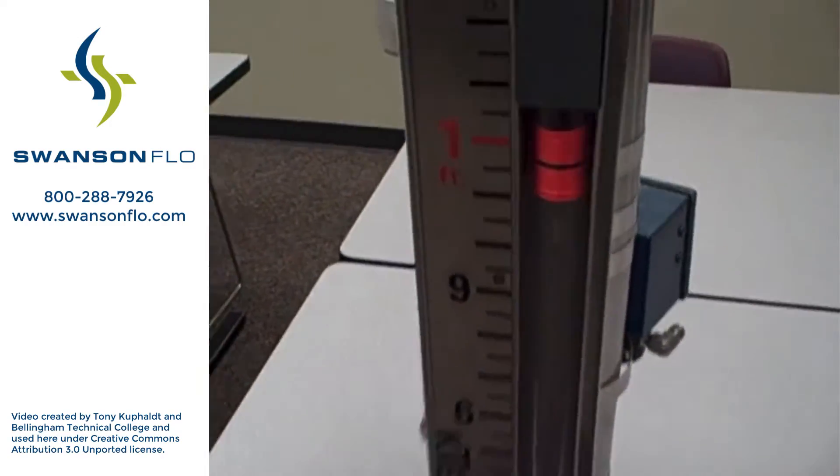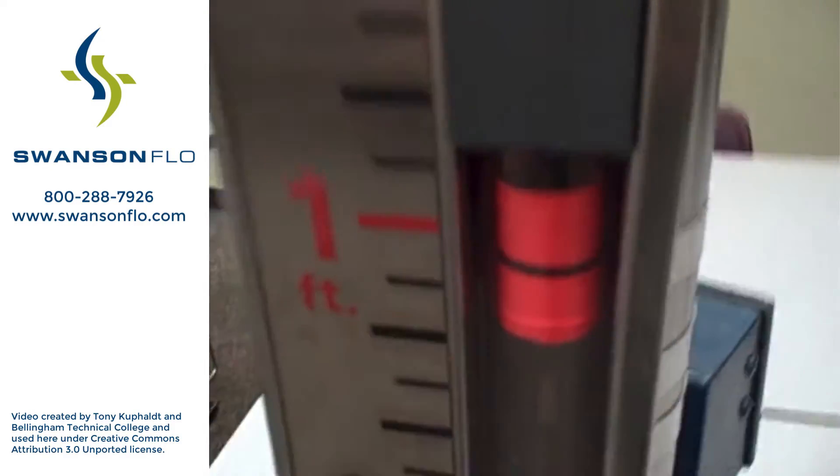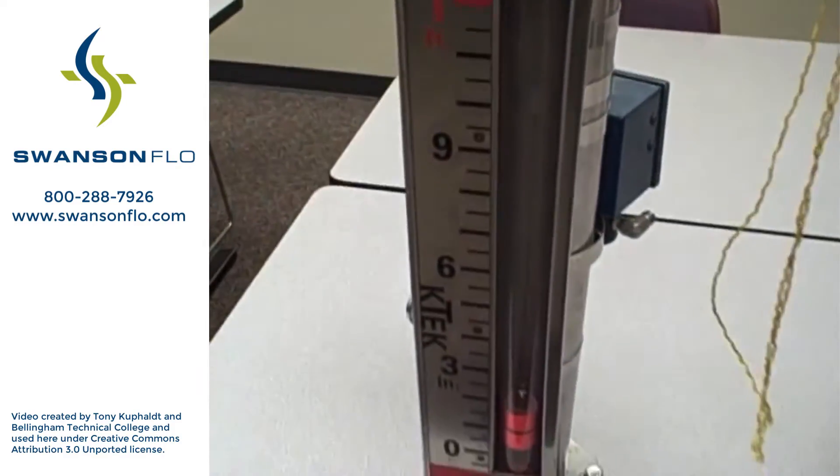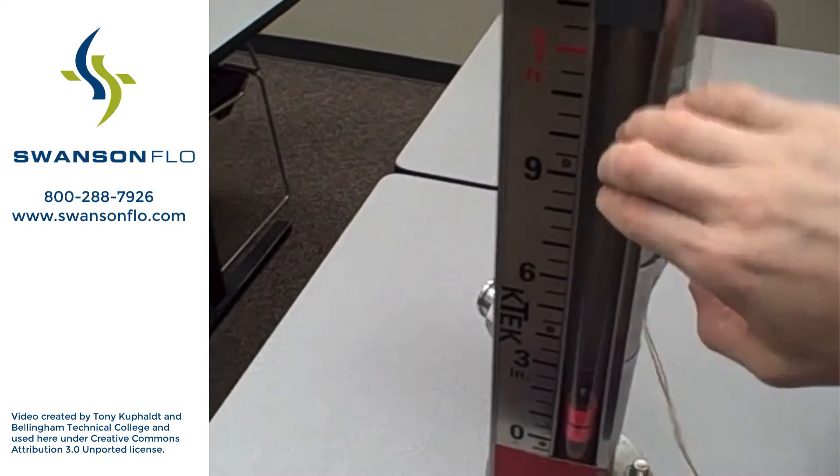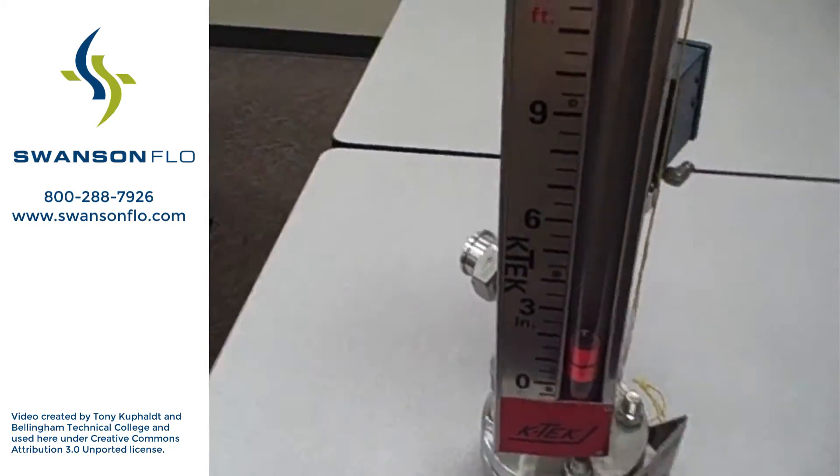So that means this glass tube we see right here with the orange fluorescent indicator is a non-pressurized element. It's nothing more than a piece of plastic. It doesn't have to be strong at all.